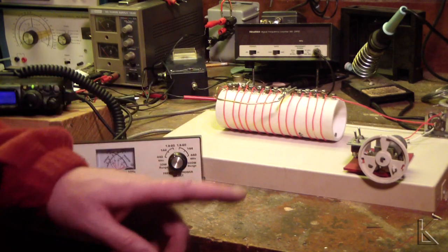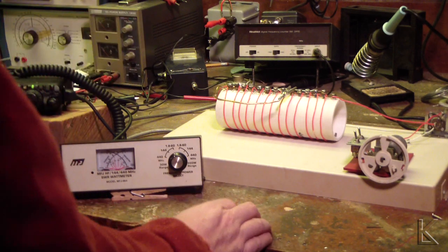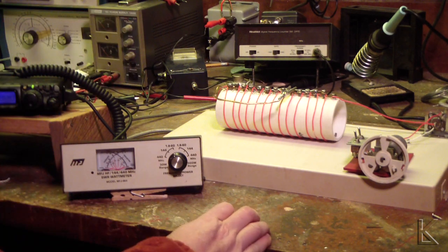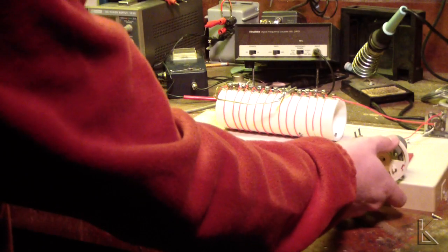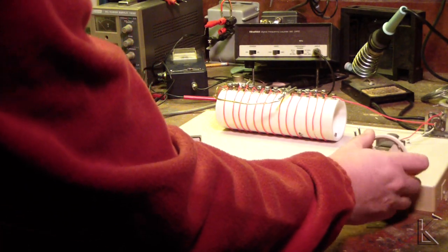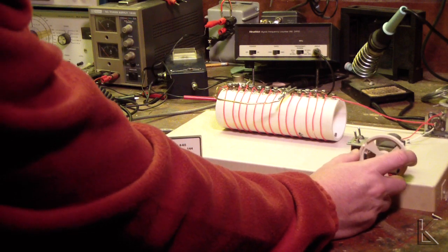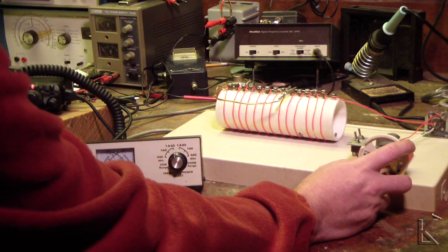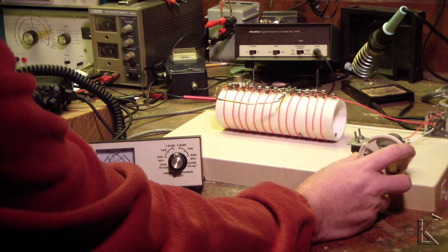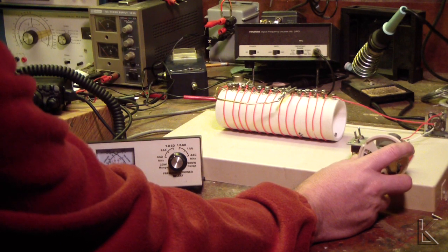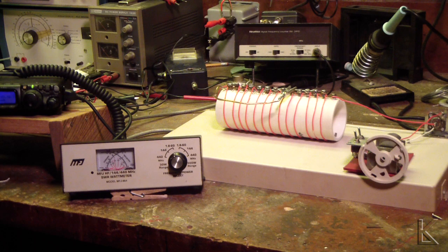I have a 2 meter 5 eighths wave antenna hooked up. I'm on 17 meters, 18 megahertz. You hear that? Right there is a static peak, so let's put out a carrier. Oh yeah. It's a little narrow, but I can tune it right down to 1 to 1 on 17 meters.